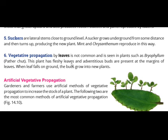Some plants have fleshy leaves with adventitious buds present at the margins of leaves. When a leaf falls on the ground, the buds grow into new plants. New leaves and new plants are reproduced from these buds. The bryophyllum plant reproduces in this way.